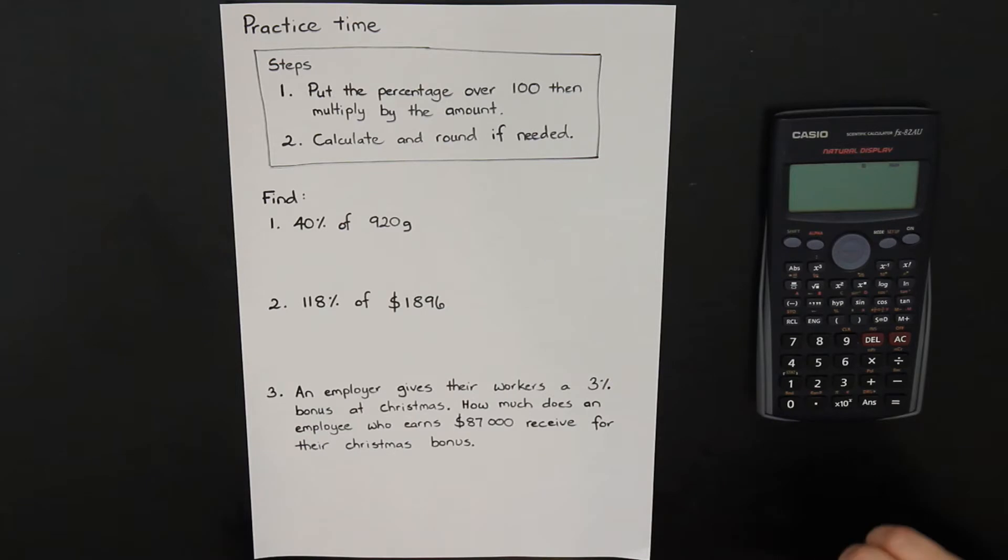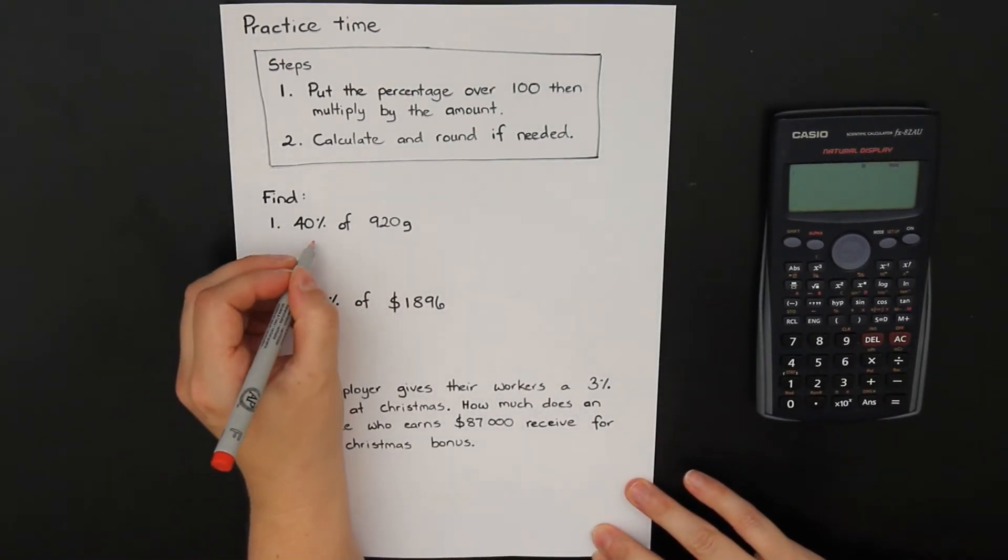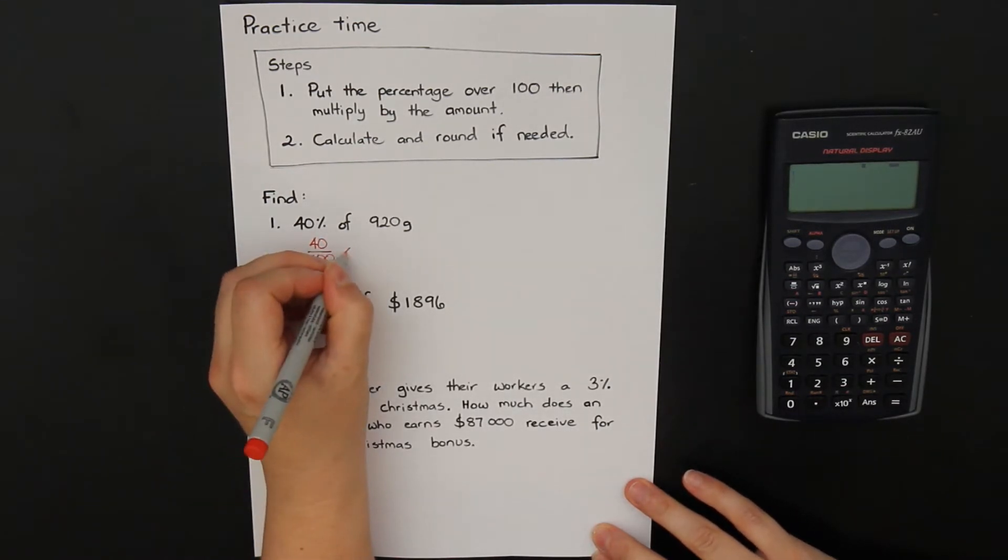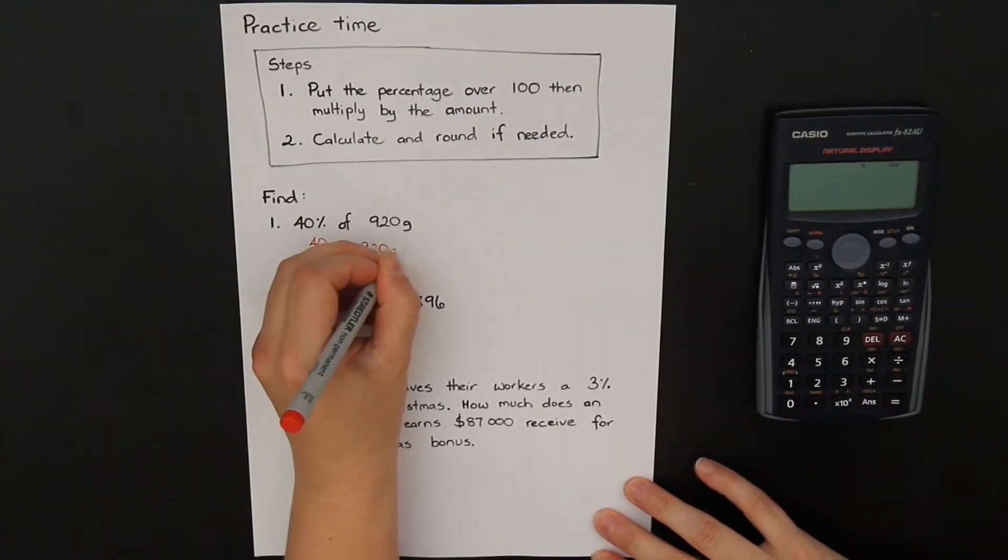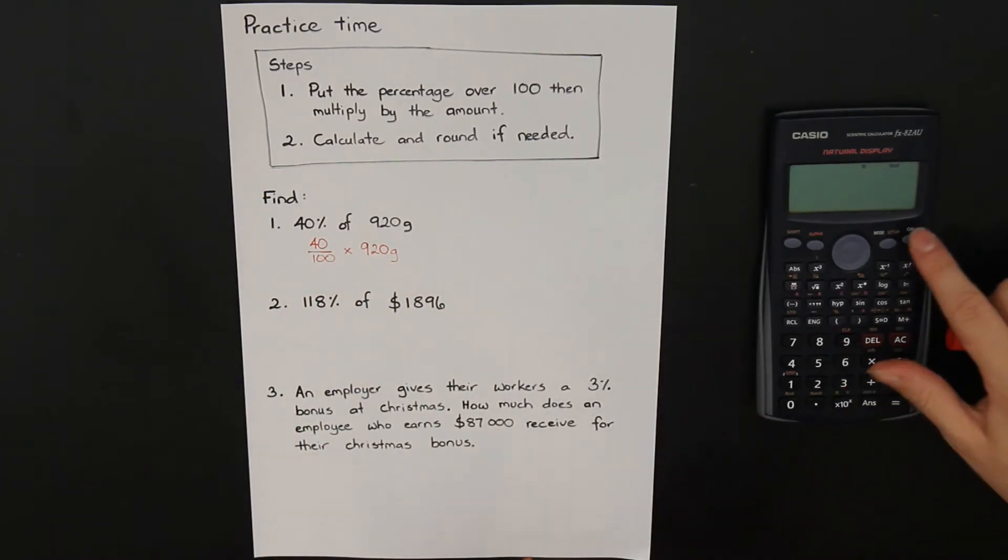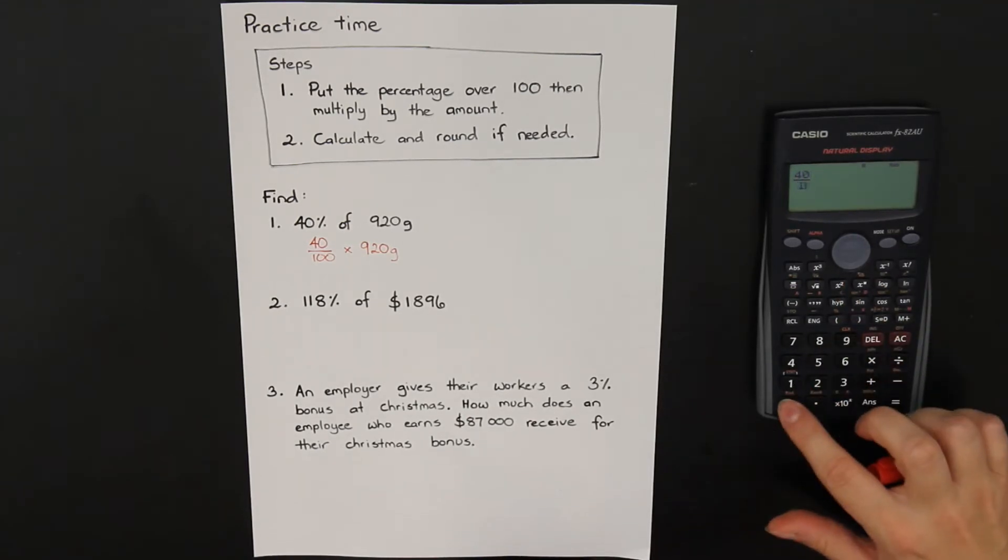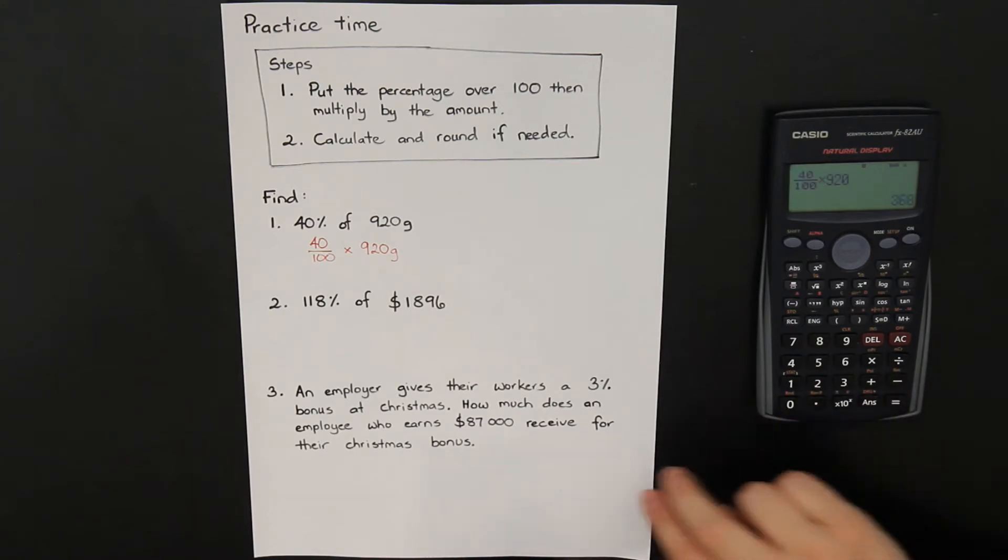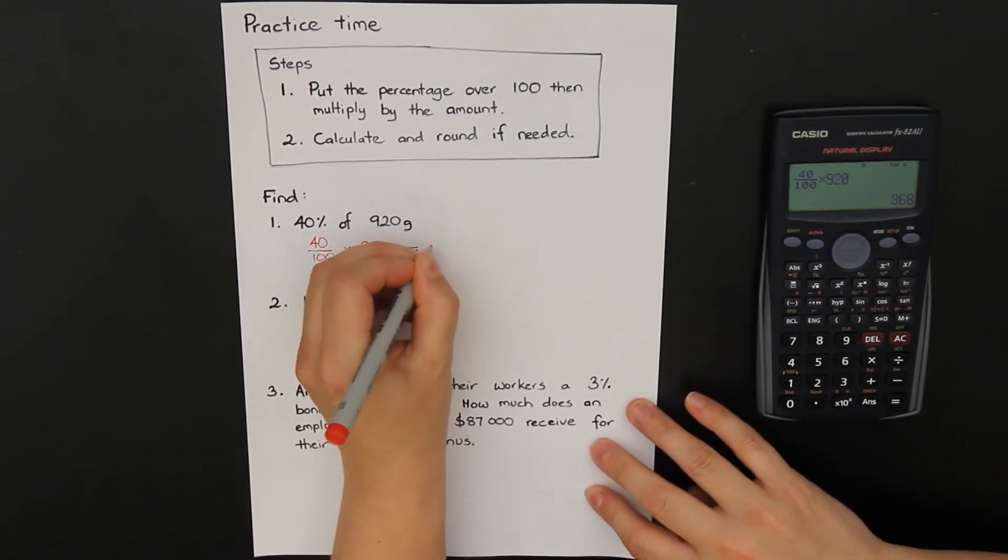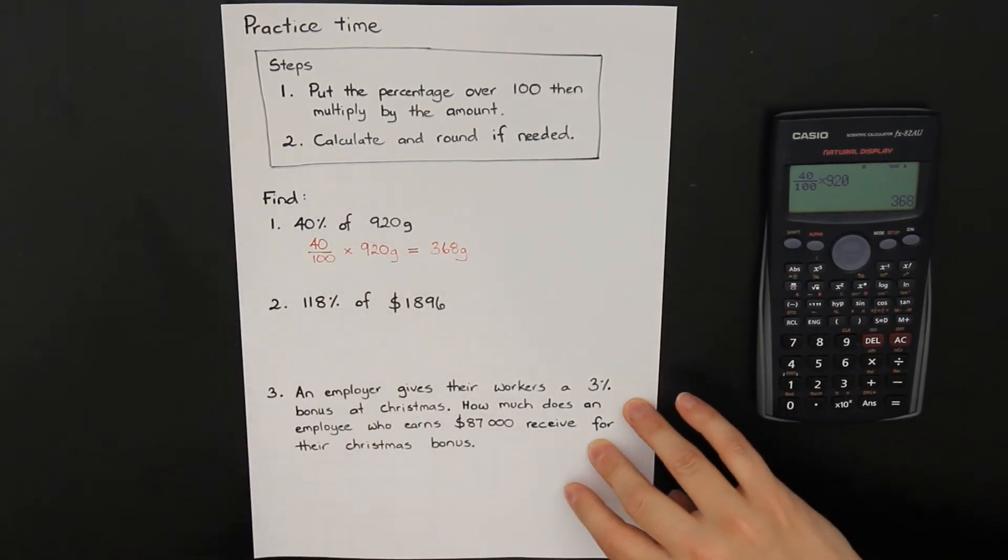All right, let's go with the answers. If I want to find 40% of 920, I take 40%, I put it over 100, of means times by 920 grams. Then I can times those together on the calculator. 40 over 100 times by 920 equals 368 grams.